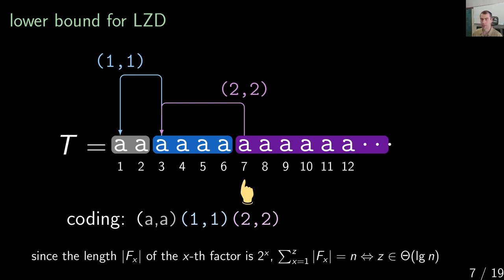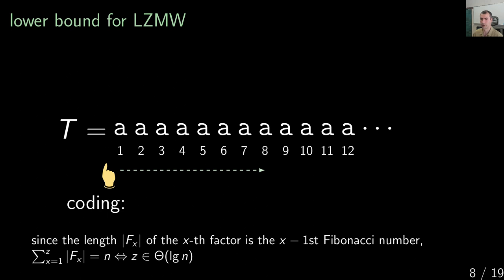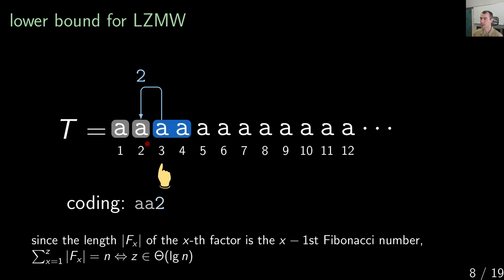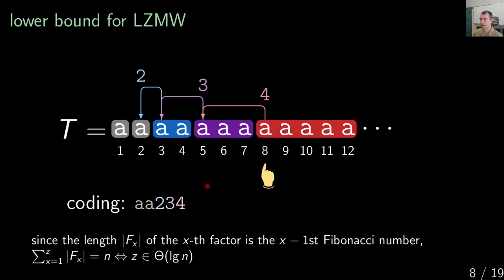For LZMW you can do the same, but the rule is that you either refer to one character or to two previous consecutive factors. So here it's 'a' and 'a', then you refer to these previous two — 'aa' — writing just the factor number. Continuing, you have lengths growing like the Fibonacci numbers, and since Fibonacci numbers grow exponentially, the number of factors is also bounded logarithmically.